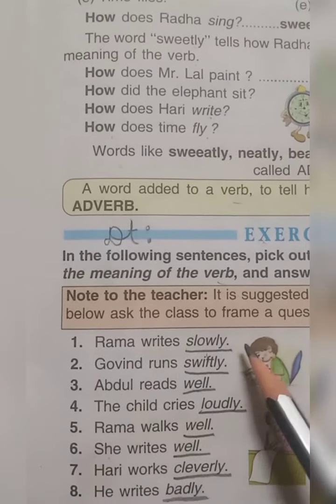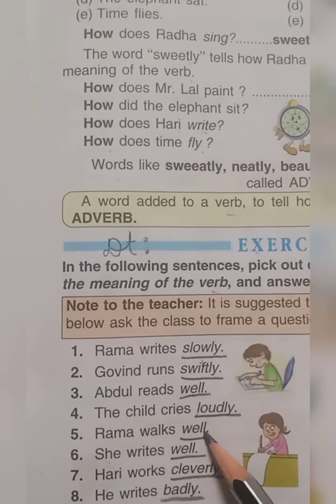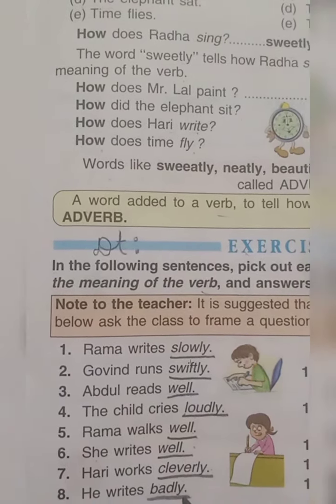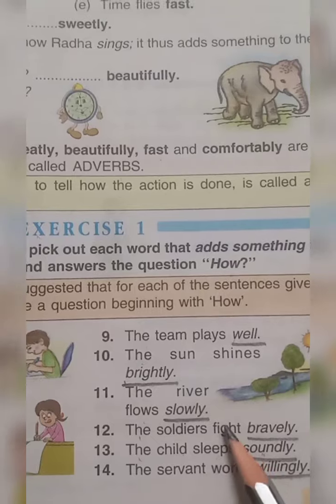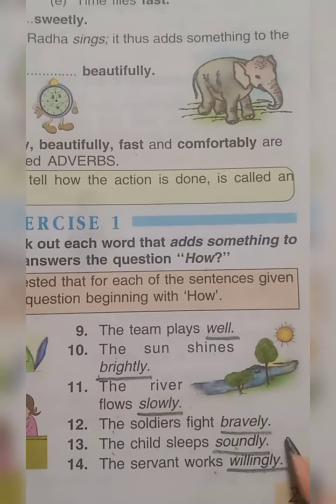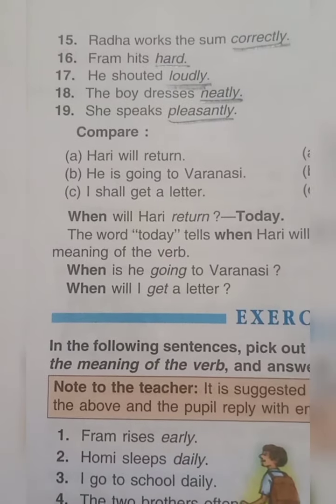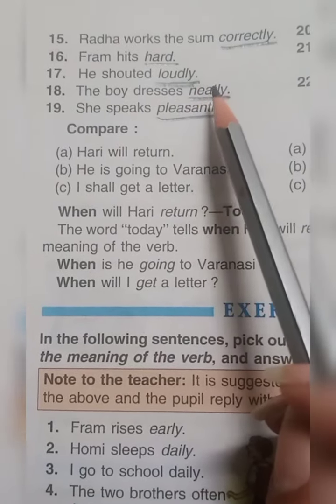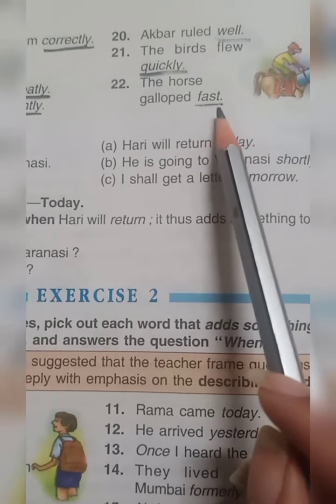Check your answers: 1) Slowly. 2) Swiftly. 3) Well. 4) Loudly. 5) Well. 6) Well. 7) Cleverly. 8) Badly. 9) Well. 10) Brightly. 11) Slowly. 12) Bravely. 13) Soundly. 14) Willingly. 15) Correctly. 16) Hard. 17) Loudly. 18) Neatly. 19) Pleasantly. 20) Well. 21) Quickly. 22) Fast.